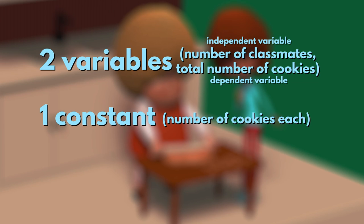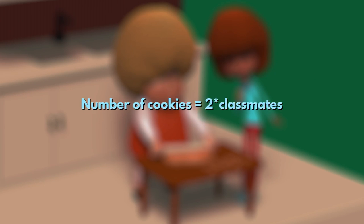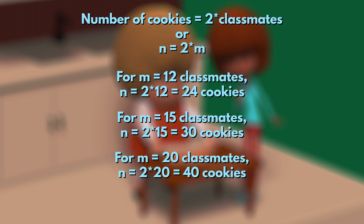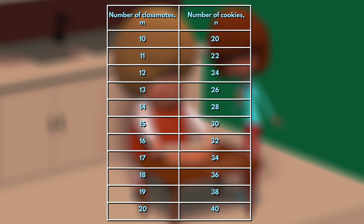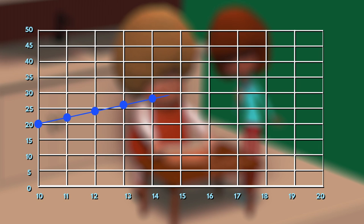That does not mean that I cannot find the number of classmates if they tell me how many cookies they had to bake, knowing that they made two for each. That does not change the fact that the number of cookies baked is based on the number of their classmates. To see how the independent variable changes the value of the dependent variable, we can create an equation for this word problem. By changing the value of the classmates, we can see how that changes the number of cookies. We could build a table with possible classmate numbers and the equivalent number of cookies to be baked. Based on those values we can build a line that represents the functional dependency between the two variables — the dependent one on the y-axis and the independent one on the x-axis — or we could use those values to build a bar graph.